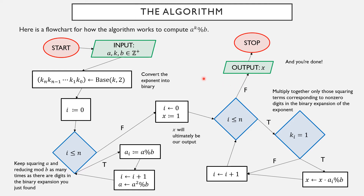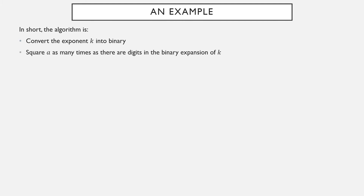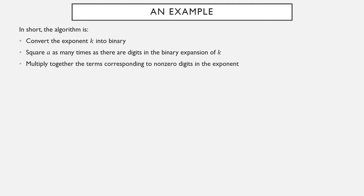So here's the successive squaring algorithm in entirety. In short, how does it work? Convert the exponent into binary. Square the number a as many times as there are digits in the binary expansion — I mean square it that many times, not multiply a against itself. Then, of all the terms you generated, multiply together the ones that correspond to non-zero digits in the exponent.